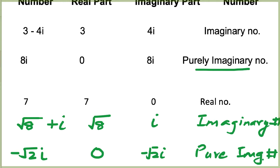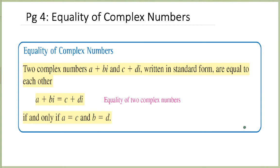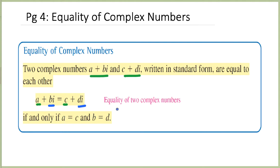Let's look at some more concepts about complex numbers. If two complex numbers are equal — say a plus bi and c plus di written in standard form — then the real part of one must equal the real part of the other, and the imaginary part bi must equal the imaginary part di. This is the definition of equality for complex numbers.